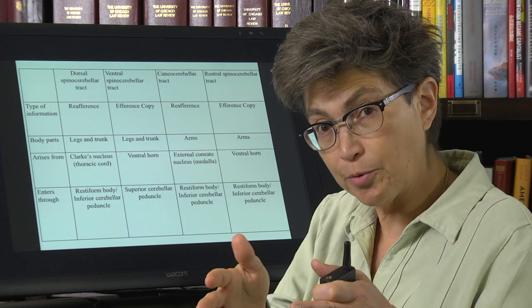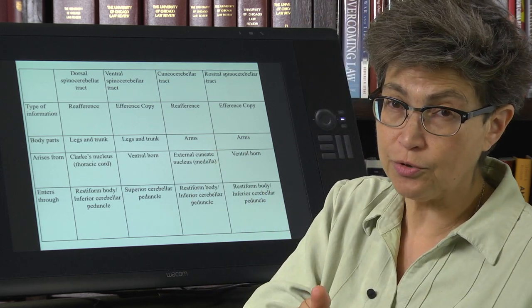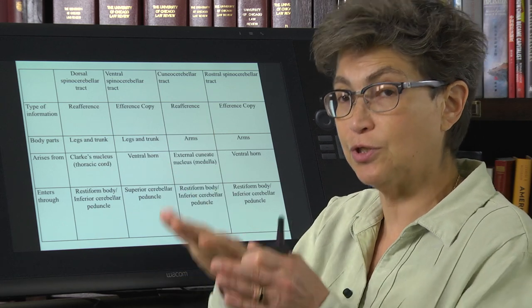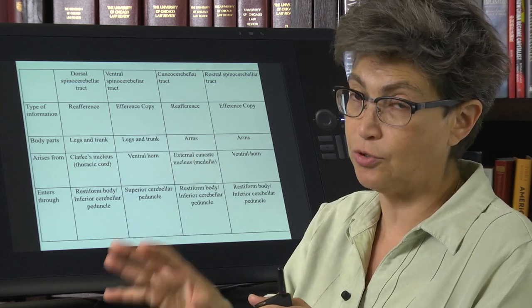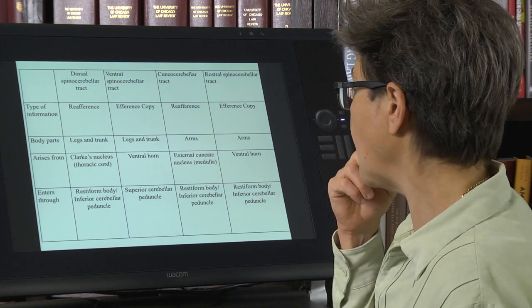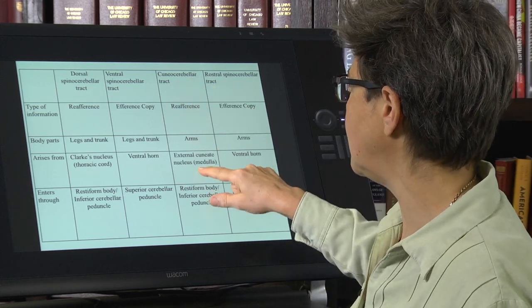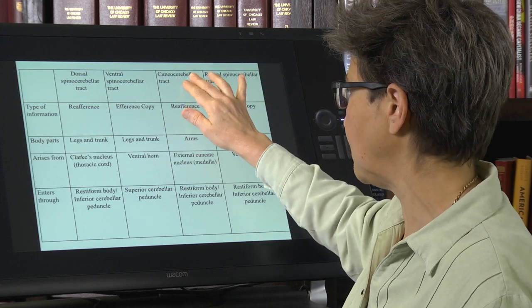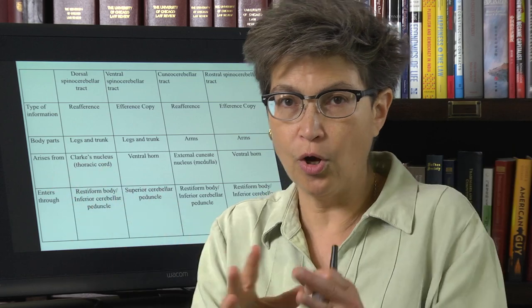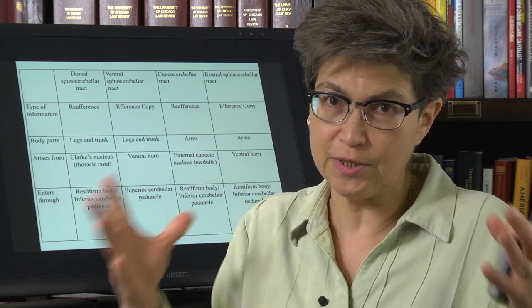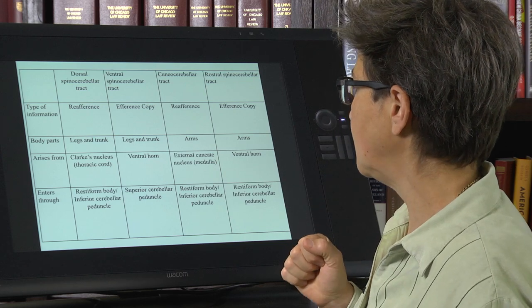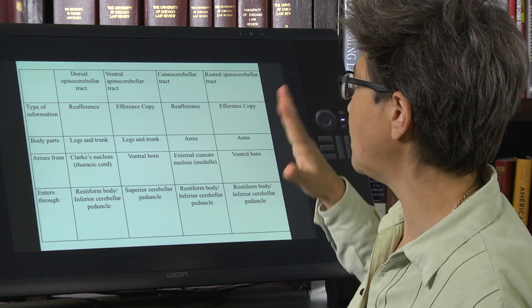There is a nucleus cuneatus and nucleus gracilis, and just lateral to the nucleus cuneatus is the external cuneate nucleus, also called the accessory cuneate nucleus. This is located in the medulla, making it a bulbocerebellar tract as opposed to a spinocerebellar tract — but everyone will always refer to all of these as spinocerebellar tracts despite that distinction.